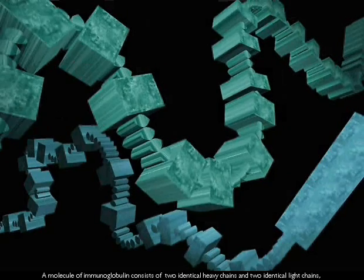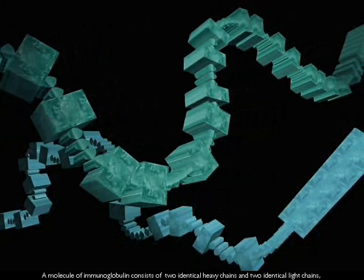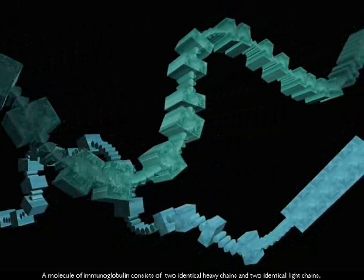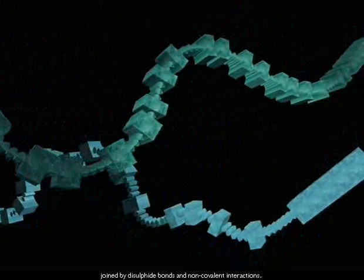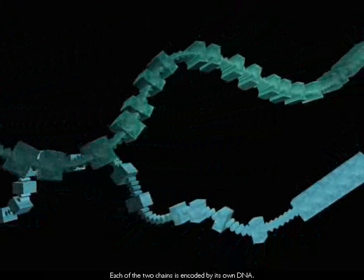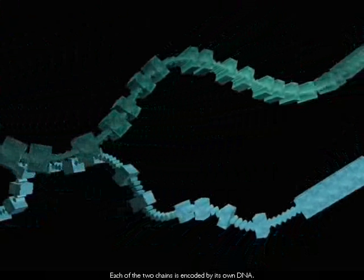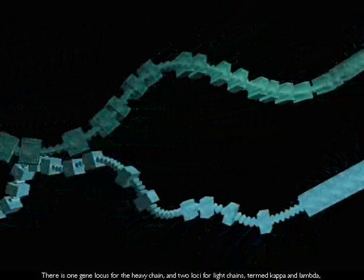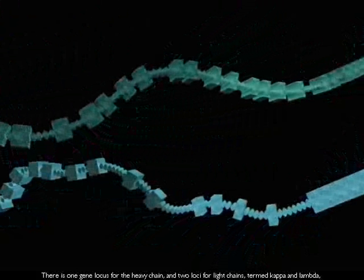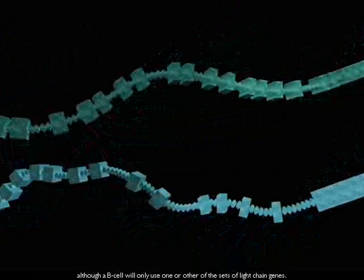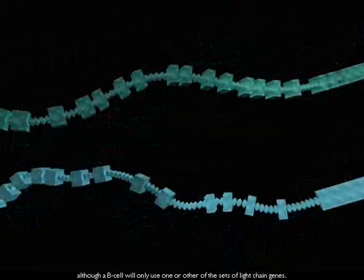A molecule of immunoglobulin consists of two identical heavy chains and two identical light chains joined by disulfide bonds and non-covalent interactions. Each of the two chains is encoded by its own DNA. There is one gene locus for the heavy chain and two loci for light chains termed kappa and lambda, although a B cell will only use one or other of the sets of light chain genes.